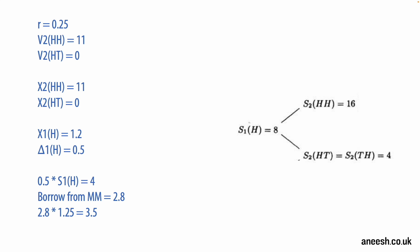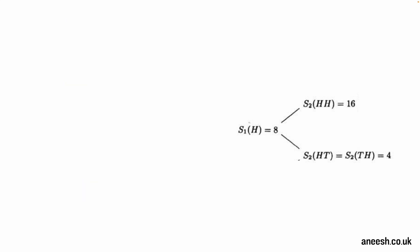Half a stock at time S1(H) is going to cost us 4 because the stock is currently valued at 8. Therefore we know we must borrow 2.8 from the money market, and after one time period at an interest rate of 25% we will then owe the money market 3.5 at the next time period. At time S2(HH) the value of half of our stock is 16 over 2, and that's going to be 8. And the value of our money market position as we've just calculated is negative 3.5. So that means our portfolio position X2(HH) is 4.5. Meanwhile, the option holder will be actually owed 11 with the stock price of 16 minus the strike price of 5, so that means we're actually making a loss of 6.5 in this scenario.